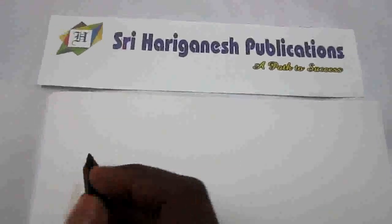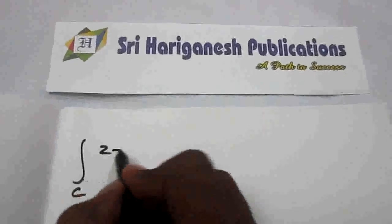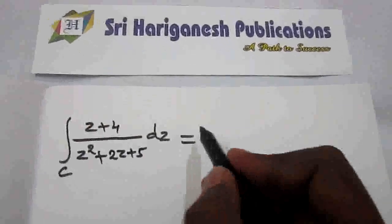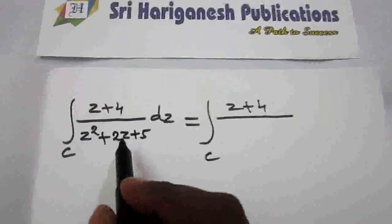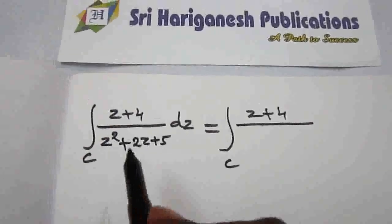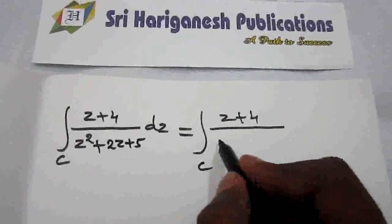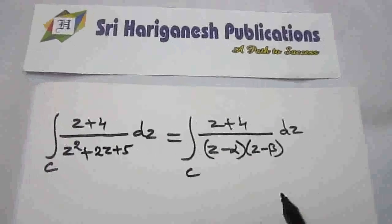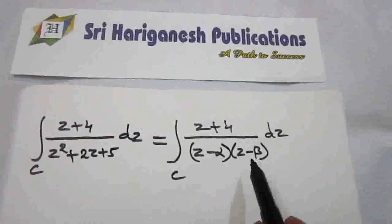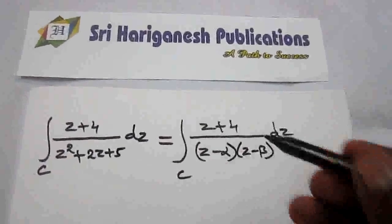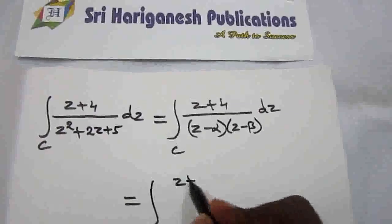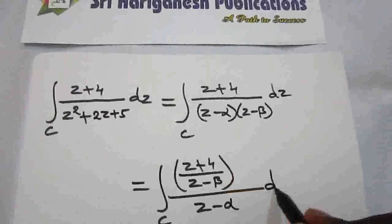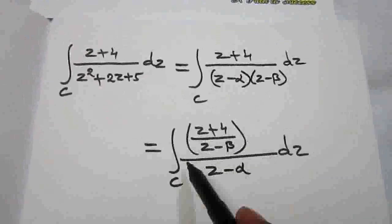Now rewrite the given integral. Since z² + 2z + 5 has roots α and β, we write: integral over C of (z + 4) / [(z - α)(z - β)] dz. Since β lies outside C, move (z - β) to the numerator, keeping (z - α) in the denominator: integral over C of [(z + 4)/(z - β)] / (z - α) dz. This matches the form integral of f(z)/(z - a).